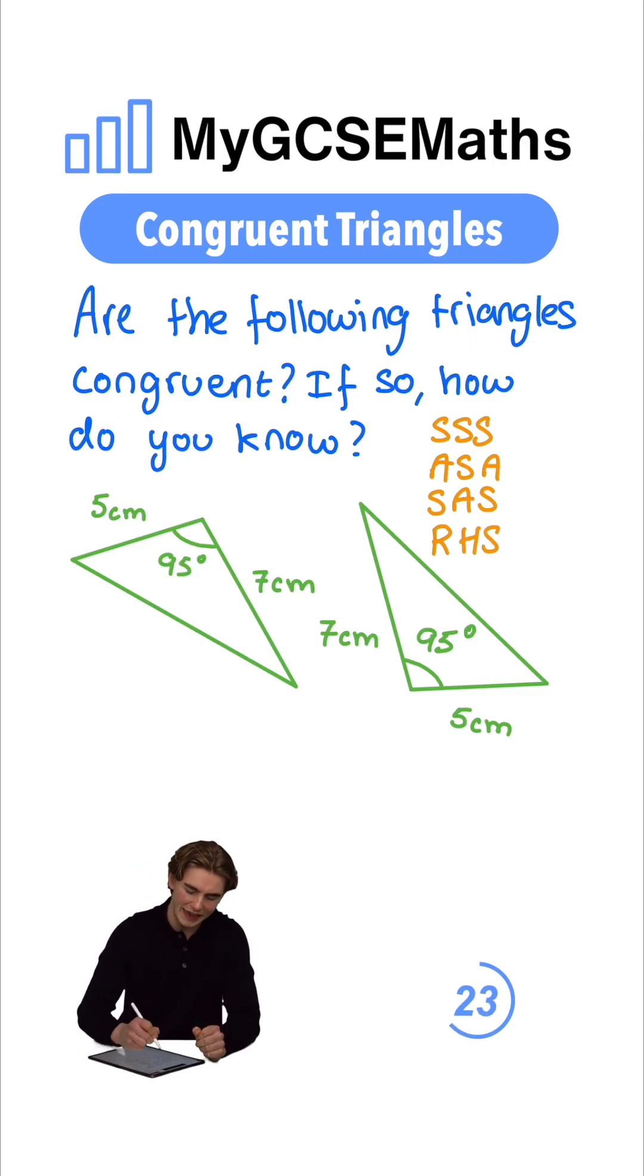Looking at these two triangles, what do we think? Can we identify whether they are congruent? Well, in both cases, we're given two side lengths. We have five and seven, five and seven. So we have side, side.